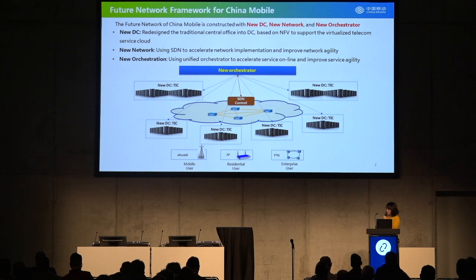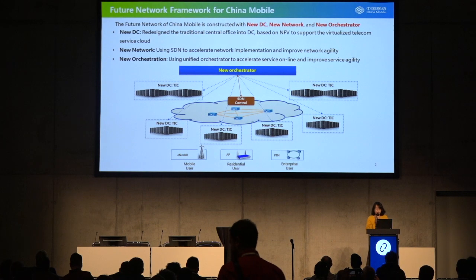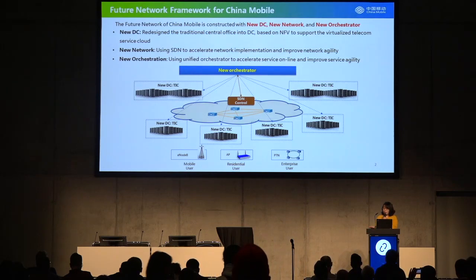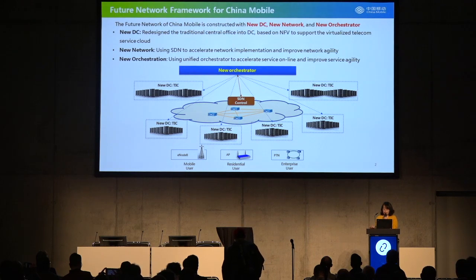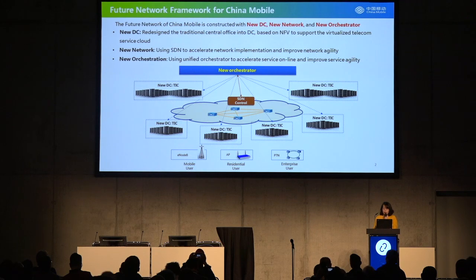I will first begin with some of the basic future network architecture in China Mobile. I actually use this picture a lot when I introduce the future network for China Mobile. We say that the future network is based on a new data center, new network, and new orchestrator. The new data center is based on the traditional central office, redesigned to have the NFV infrastructure base to support all those virtualized network functions. We have our new network based on SDN so as to improve the agility of the network.